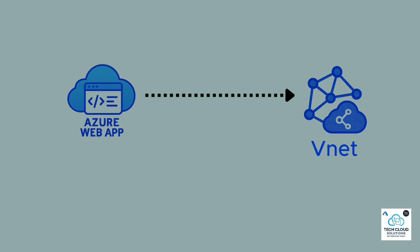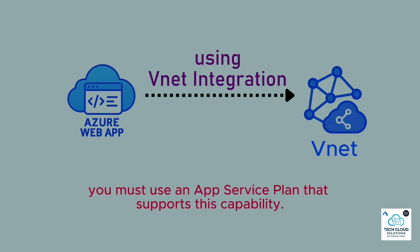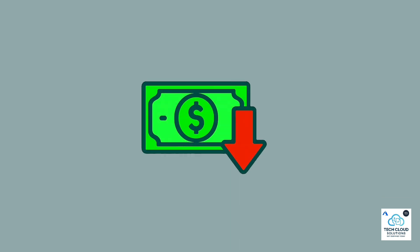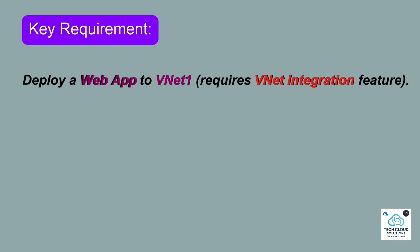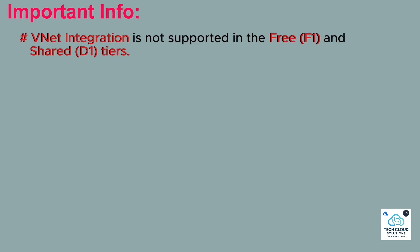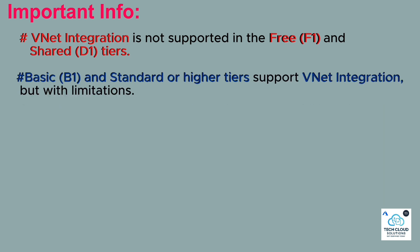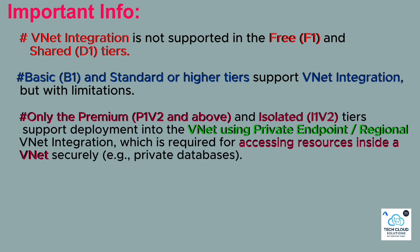To deploy an Azure web app to a virtual network using VNet integration, you must use an app service plan that supports this capability. Key requirement: deploy a web app to VNet1, which requires the VNet integration feature. VNet integration is not supported in the free F1 and shared D1 tiers. Basic B1 and standard or higher tiers support VNet integration, but with limitations. Only the Premium P1V2 and above, and Isolated I1V2 tiers support deployment into the VNet using private endpoint regional VNet integration, which is required for accessing resources inside the VNet securely, e.g. private databases.